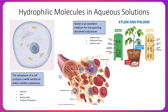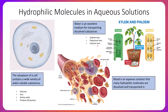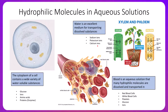Water is an excellent medium for transporting dissolved substances. In plants, the xylem and phloem are the transport tissues, and substances transported by them include sodium ions, potassium ions, and calcium ions. For organisms like ourselves, blood is our transport medium — blood is an aqueous solution in which many hydrophilic molecules are dissolved and transported, including red blood cells, white blood cells, platelets, glucose, and ions. Both plants and animals have the necessity of transporting nutrients and ions throughout the organism.